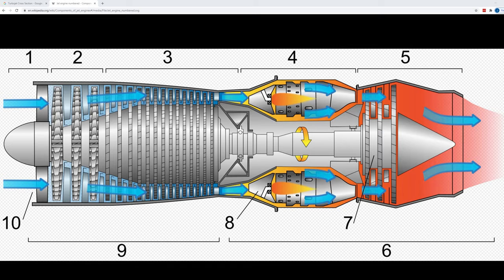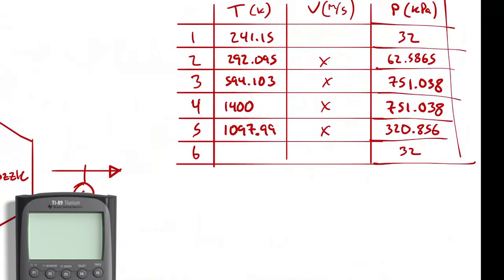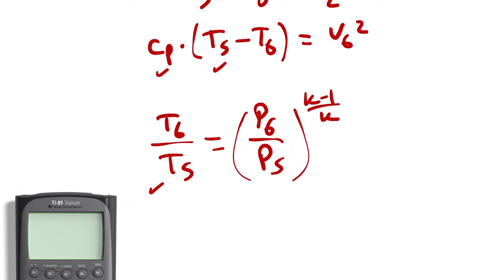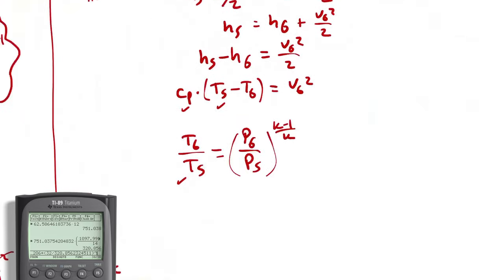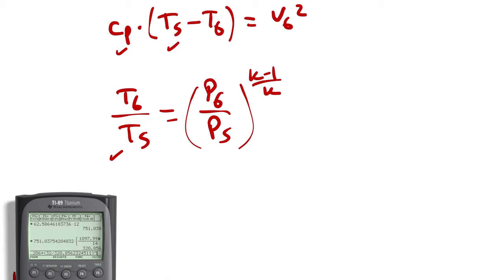Returning to the calculation: using the isentropic relation from state 5 to state 6 with the pressure ratio across the nozzle. T6 = T5 × (P6/P5)^((K-1)/K) = 1097.99 × (32/320.856)^(0.4/1.4).